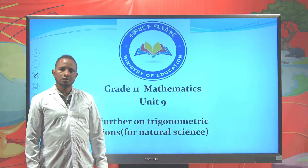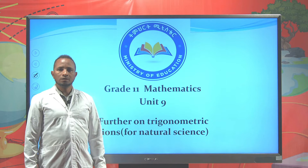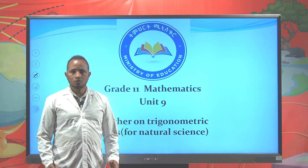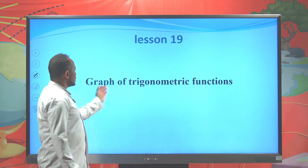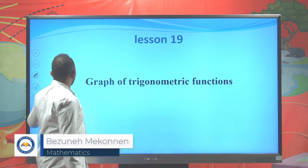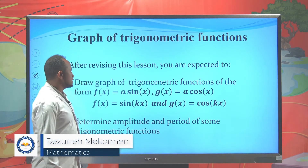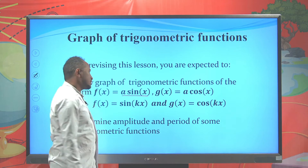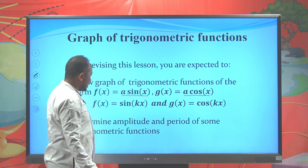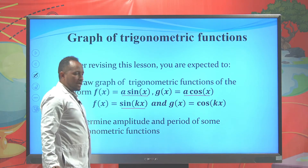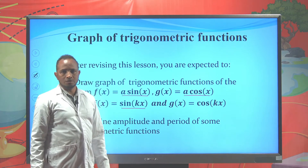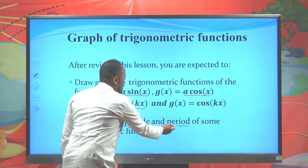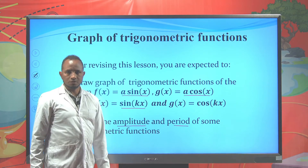Hello, dear students. This is a Grade 11 mathematics lesson on Unit 9, further on trigonometric functions. This chapter is designed for natural science students only. Today we focus on graphs of trigonometric functions. After completing this lesson, you are expected to draw the graph of functions of the form f(x) = a·sin(x), g(x) = a·cos(x), f(x) = sin(kx), and g(x) = cos(kx). In addition, you are expected to determine the amplitude and period of some trigonometric functions.